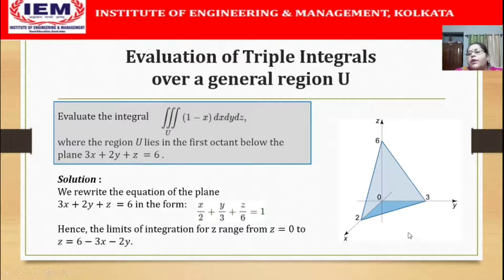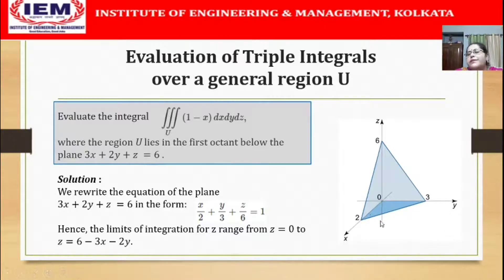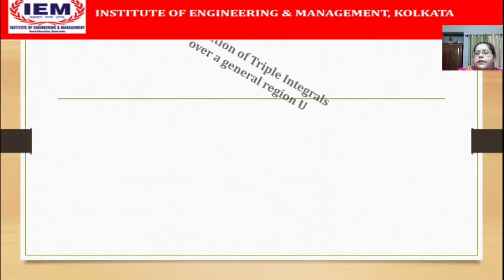Treating this as a type 1 region, we first find the limits of z. Taking a vertical strip, the lower surface is the xy plane, so z = 0, and the upper surface is the plane itself, giving z = 6 - 3x - 2y. The projection of this region lies on the xy plane, forming a triangle.